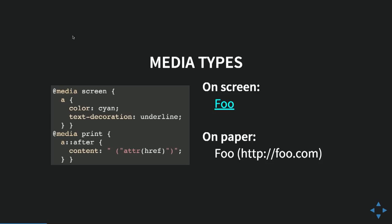Very briefly — because I think everybody sort of knows what this is, but to make sure we're on the same page. At media screen, you put a bunch of rules in there, and they only apply when you're on screen. At media print, you put some other rules, and they apply when you're on paper. So your links can be blue and underlined in one case, and you can show the content of the URL in another case. That is what we got in CSS 2.1 and HTML 4.